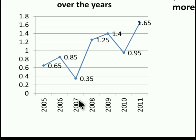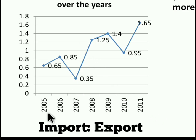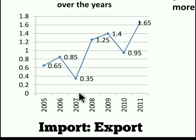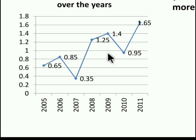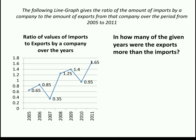This line graph gives 7 years of import and export data for a company. If you take 2005, the ratio of import to export is 0.65. The ratio in 2006 is 0.85, and in 2007 it is 0.35. Until 2011, the data is given for us. Now based on this data, we are going to solve the first problem.